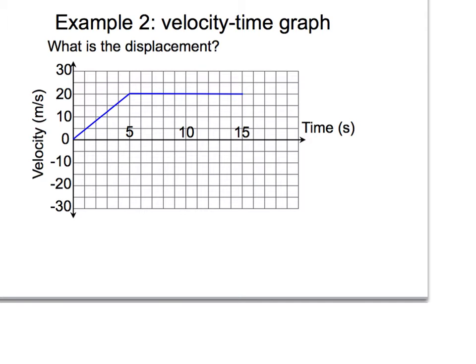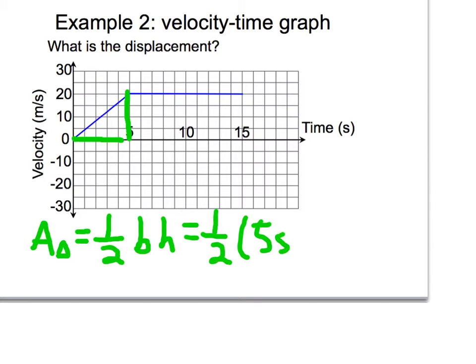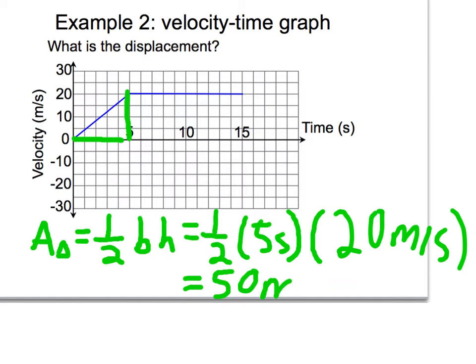Alright, so let's find the area of the two shapes on here. First, let's do a triangle. So the area for a triangle is one half the base times the height. The base of the triangle, this measure here, is five seconds. So one half, five seconds, times the height. Notice I am keeping my units. Zero to twenty would be twenty meters per second. And that gives me five times twenty is a hundred. Half of that is fifty. Fifty meters. So that's the area of the triangle.